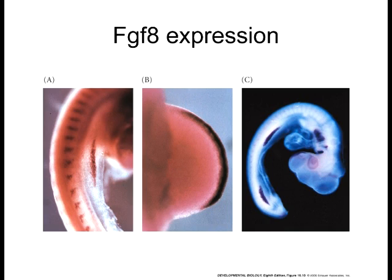Even if you just take off this top layer with the limb bud forming, it will not progress — you will not get limb formation. That's the signaling center. This is the one that is inducing the limb to not only grow outwards, but to also undergo differentiation.